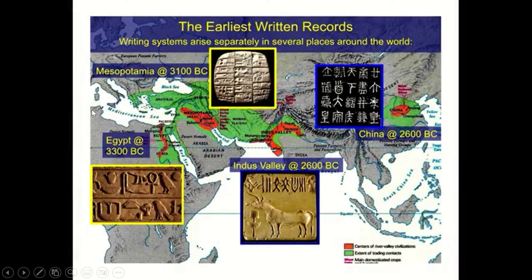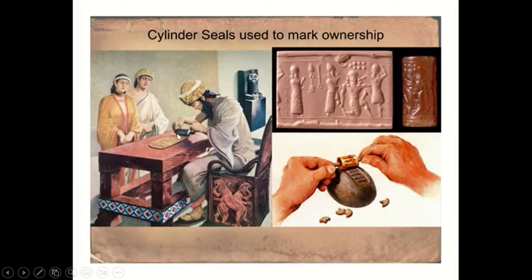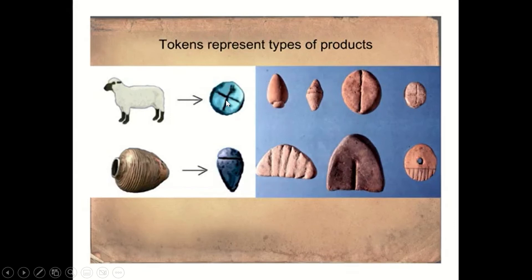Do y'all remember what was the last thing we talked about yesterday? The tokens — we started talking about the tokens. Essentially we started talking about tax records and stuff like that, we had these tokens. And you have the bulla — the bulla was like a wallet, right, and you kind of kept your tax record. You trade the tokens and maybe keep track of them.